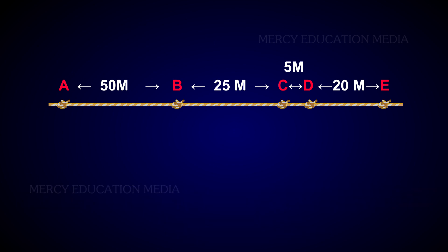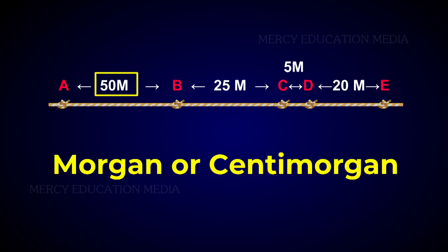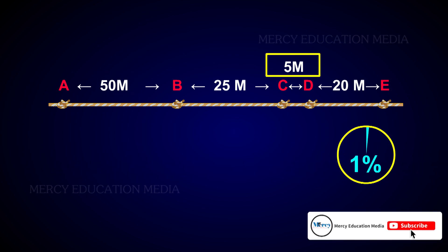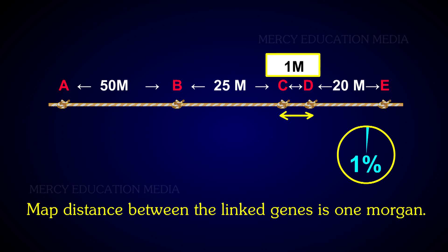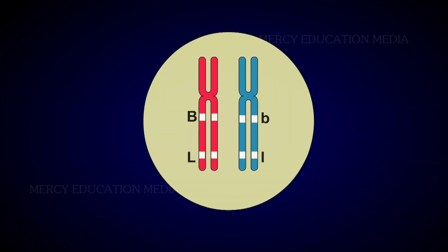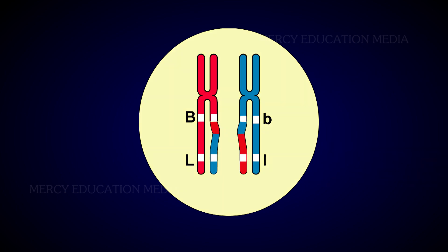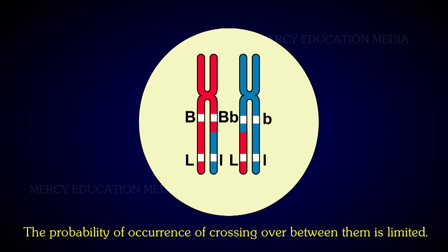The unit of a genetic map is morgan or centimorgan. When the percentage of crossing over between two linked genes is 1%, the map distance between them is 1 morgan. The probability of crossing over between two genes is directly proportional to the distance between them. When two genes are nearer, the probability of crossing over between them is limited.